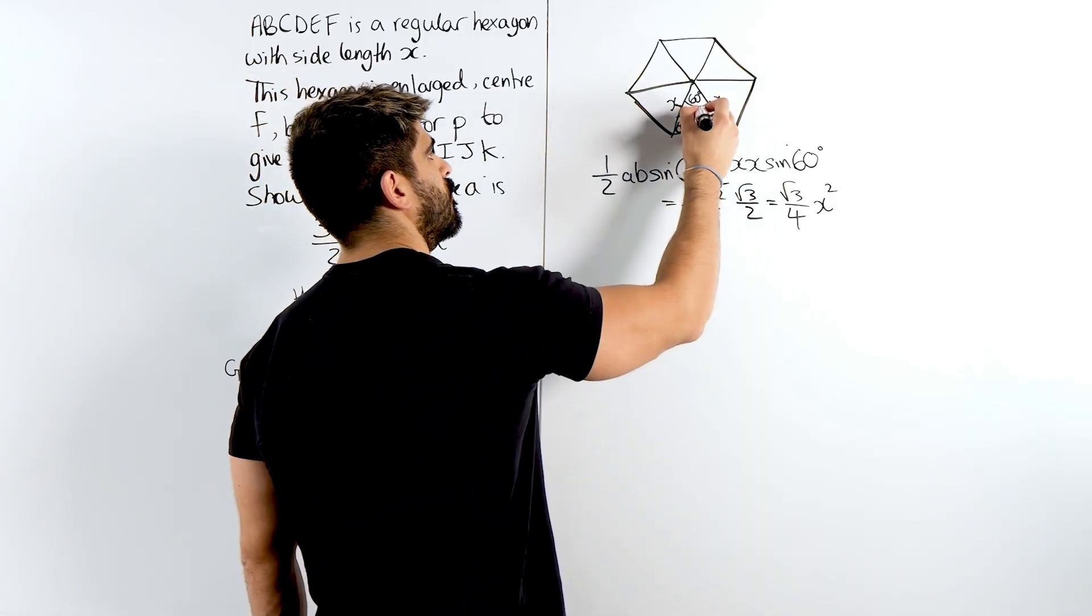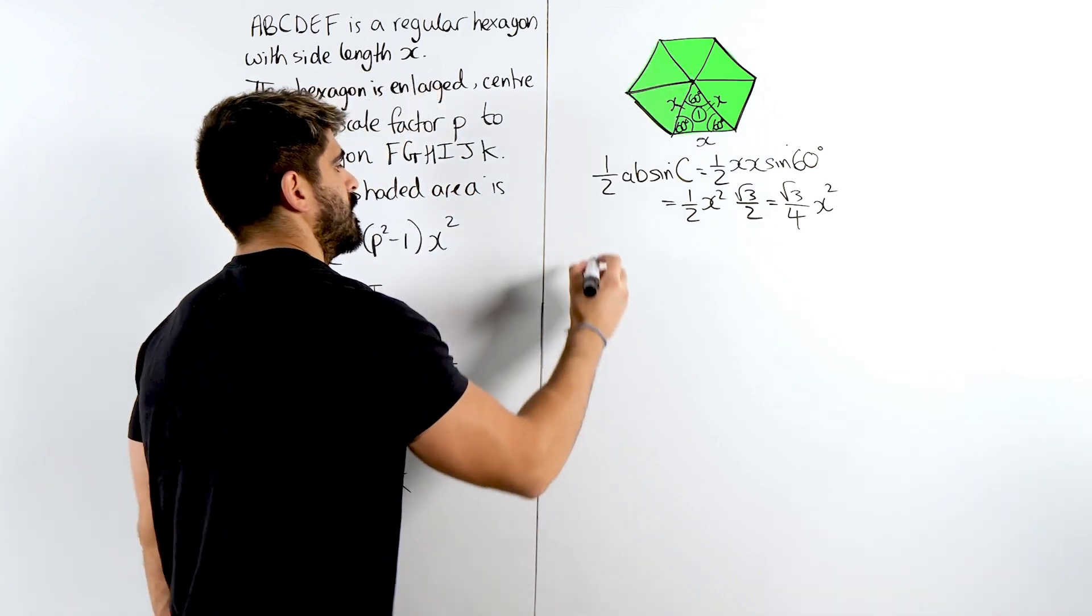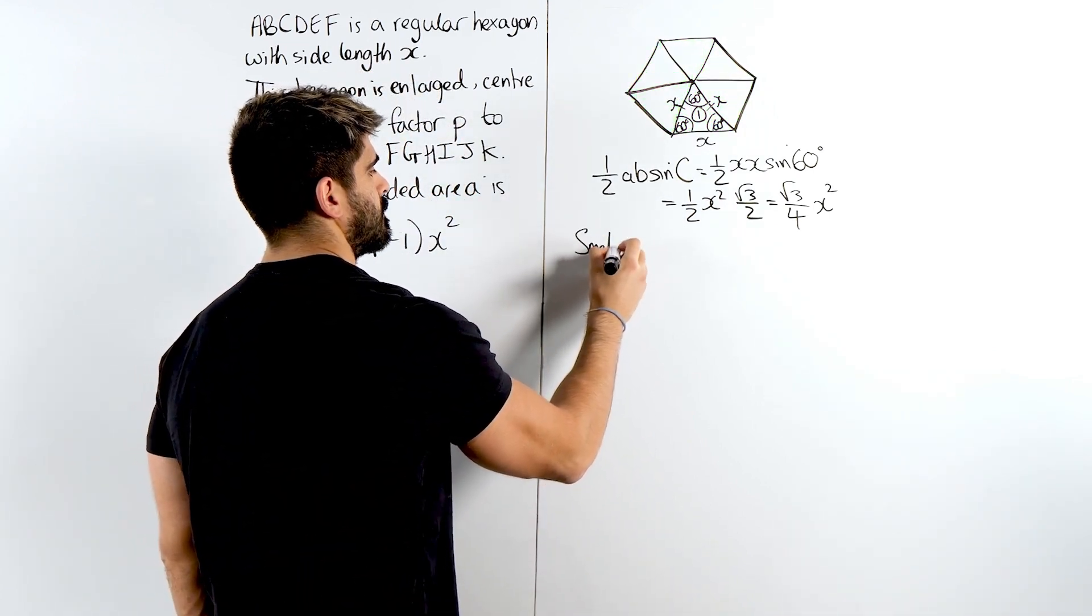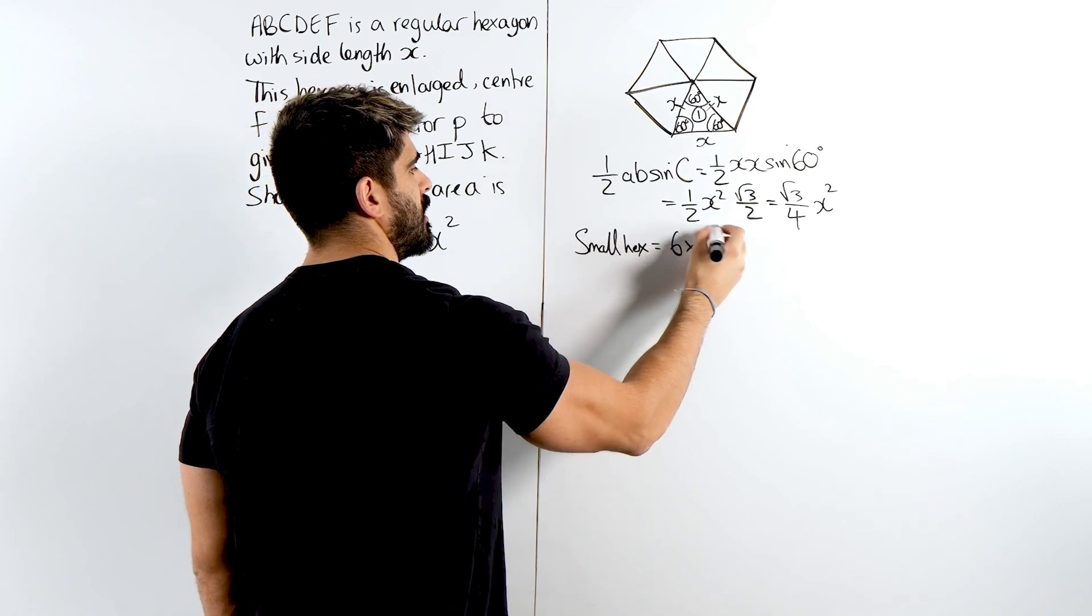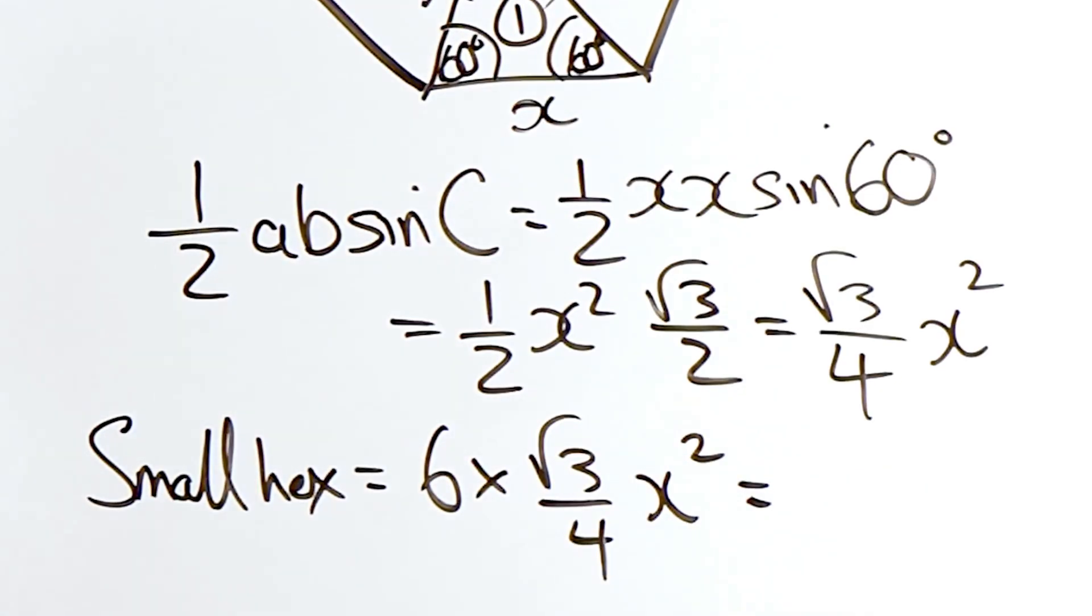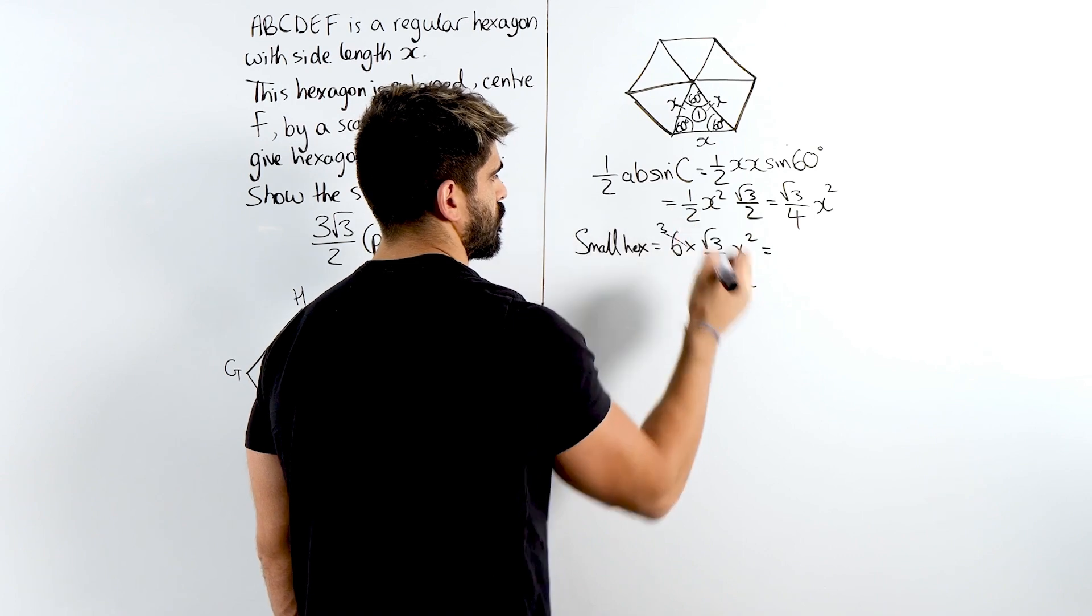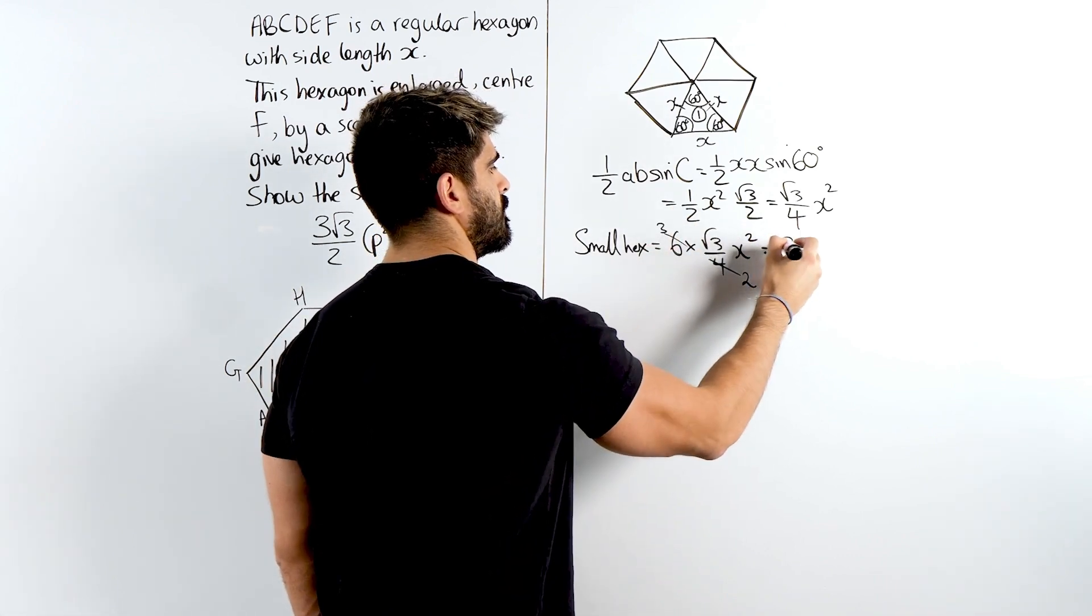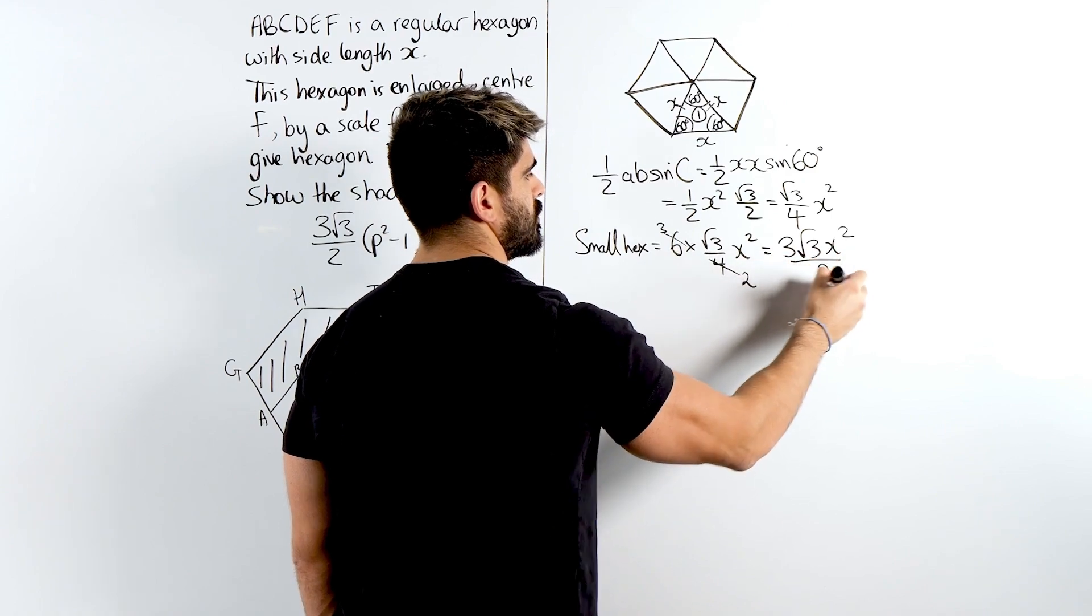Now that's just the area of one of these. There's six of them. So the small hex is 6 lots of root 3 over 4, X squared. Now we can simplify that. We can divide top and bottom by 2 here. Cross cancellation. 4 divided by 2 is 2, 6 divided by 2 is 3. So you have 3 root 3 X squared all over 2 in the bottom.